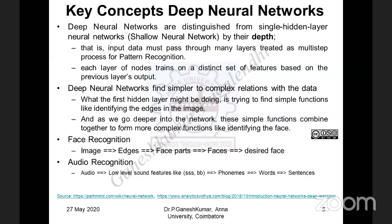In one layer, some set of features are processed and given as input to the next layer, where another set of features are processed — this multi-step processing continues. A deep neural network finds relationships among data from simpler to more complex form. For example, in face recognition, the first set of layers understand edge-related features, followed by facial parts, then faces, and finally the desired face. Similarly, in audio recognition, the first layers identify low-level features, then phonemes, then words, then sentences. This is the key concept behind the operation of a deep neural network.